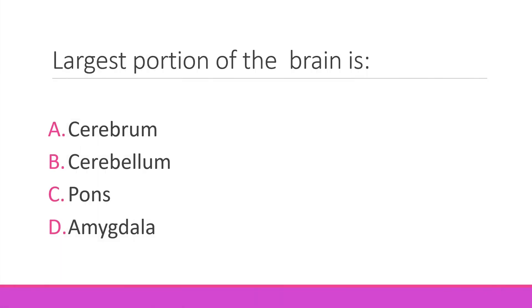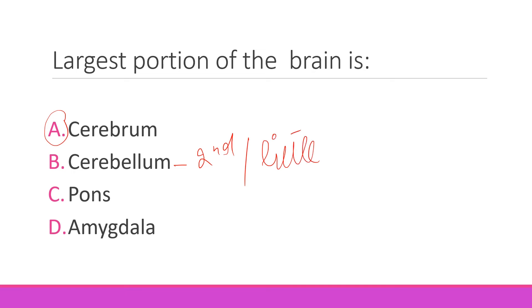The largest portion of the brain is — more than 85 percent of the brain — that is the cerebrum. The second largest part of the brain is the cerebellum, which means 'little brain.' So the right option is alpha — cerebrum.